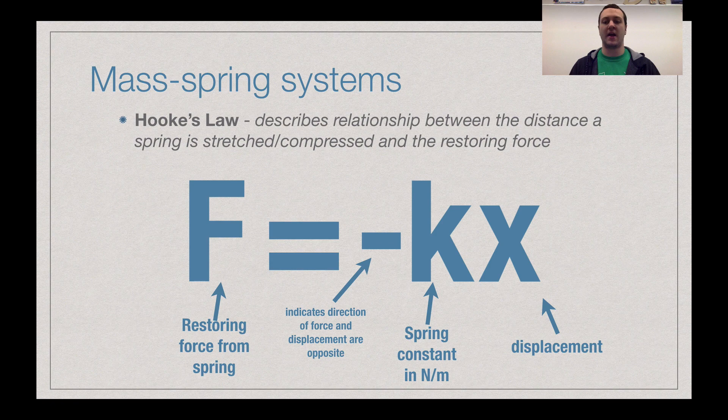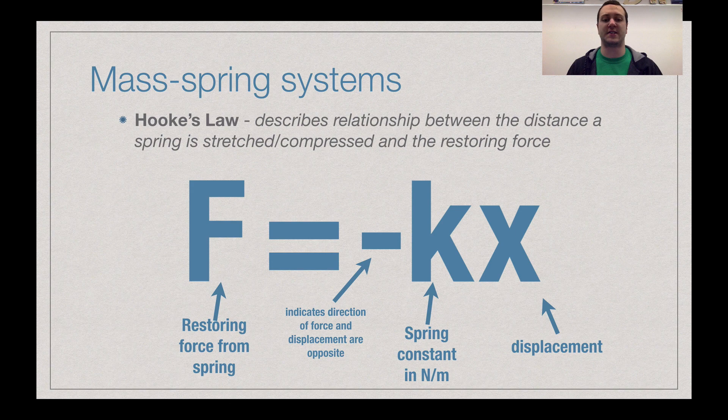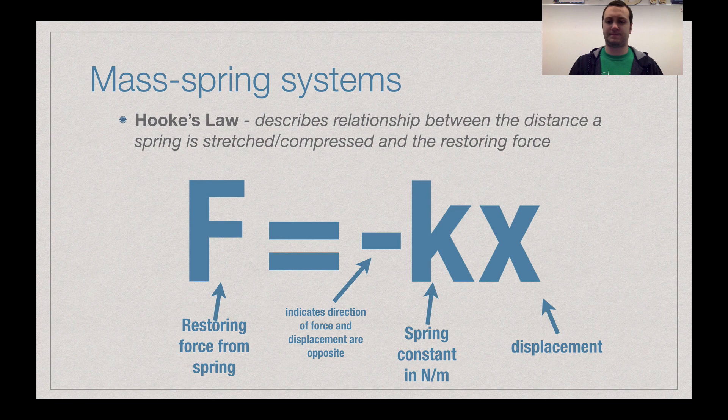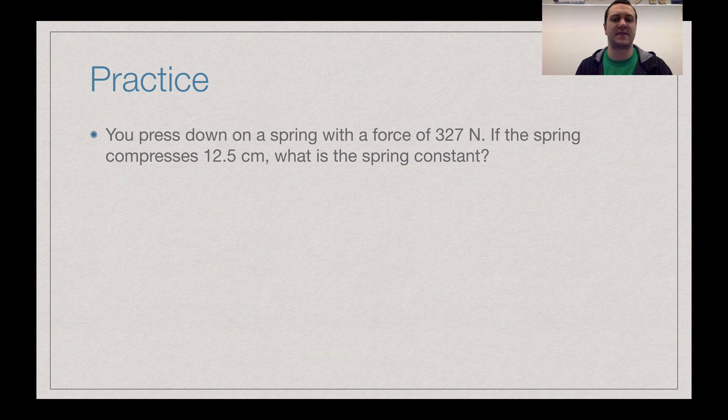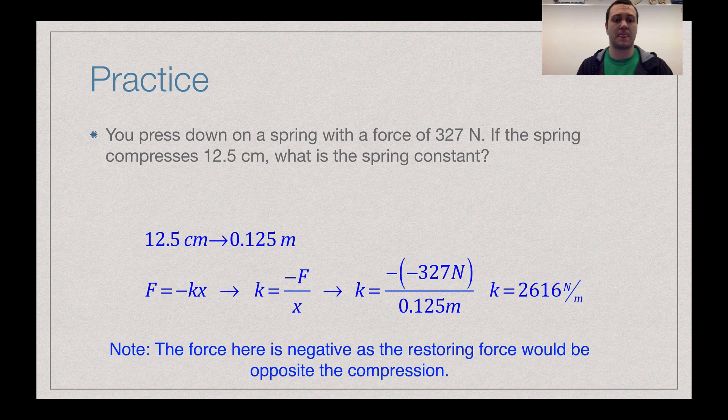As that displacement, whether it's stretch or compress, increases, the amount of force it's going to take to bring that mass spring system back to equilibrium is going to increase as well. So the way to practice with Hooke's Law, you press down on a spring with a force of 327 newtons. If the spring compresses 12.5 centimeters, what is the spring constant? So what is that K value?